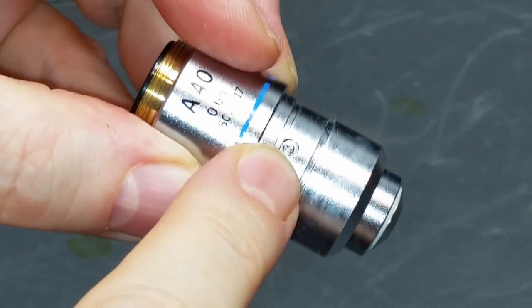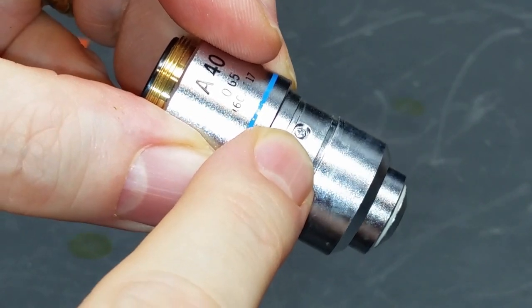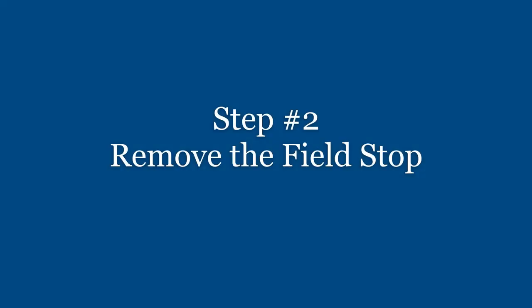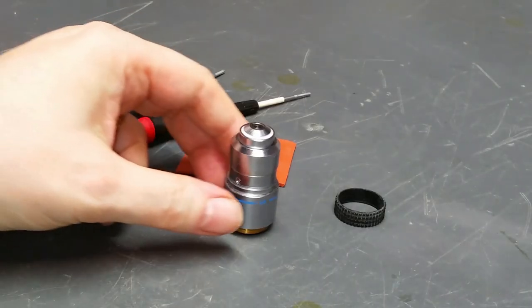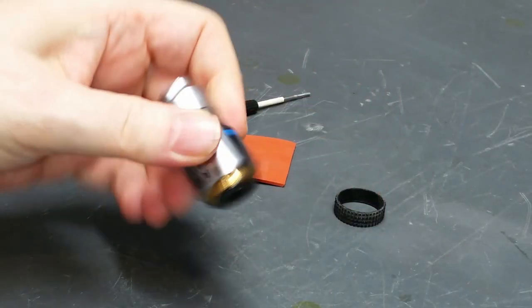This is what's under it. There's a very little cross-point screw right there. Okay, so now the ring is removed.